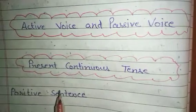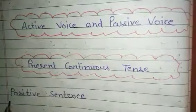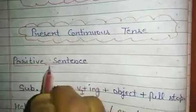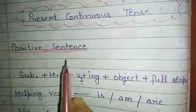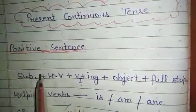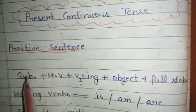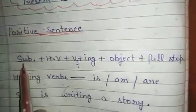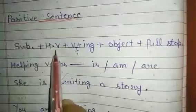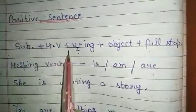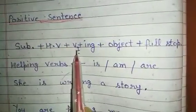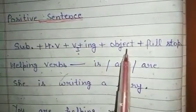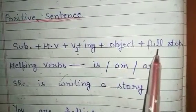First of all, we will see the positive sentence of present continuous tense. The formation of a positive sentence is: subject plus helping verb plus root form of verb plus -ing plus object plus full stop.